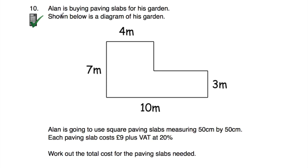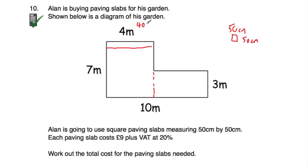Question ten: Alan is buying pavement slabs for his garden. The slabs are 50cm by 50cm, each costing £9 plus VAT at 20%. We need to work out how many slabs are needed. For the first section of the garden (4m wide by 7m long): converting to centimetres, 400cm divided by 50 = 8 slabs per row, and 700cm divided by 50 = 14 rows. So 14 times 8 = 112 slabs in this section.